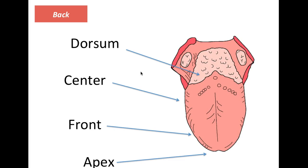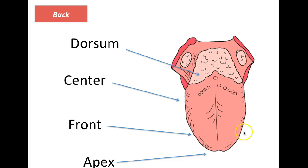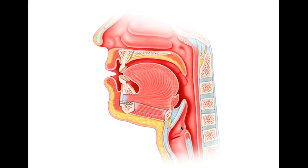Here is the side view of the tongue. This is the tip of the tongue and this is the alveoli over here. When the tip of the tongue touches the alveoli, we produce sounds such as 'T.'